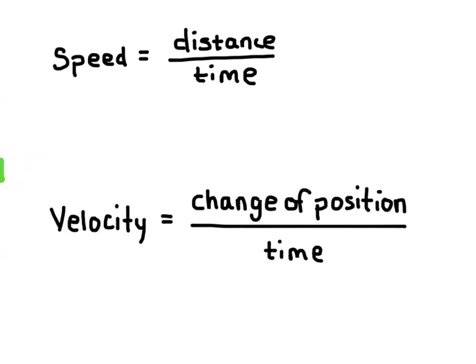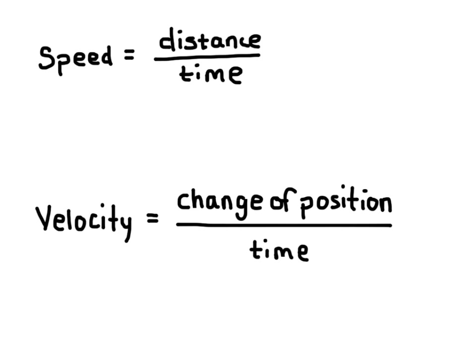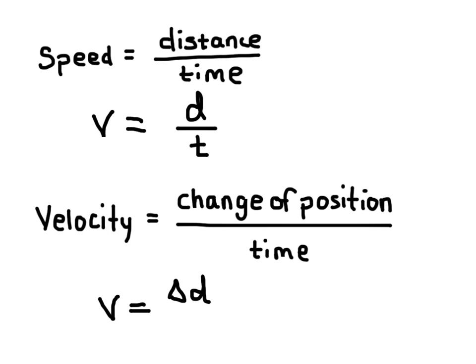So how do we calculate speed and velocity? Speed is the amount of distance traveled over the length of time it took to travel that distance. The symbol for speed is V — it makes more sense because the same symbol is used for velocity, and velocity starts with a V. So we have V equals distance D over time T. Velocity is equal to the change in position over the time it took to change that position. We use the same symbol: V equals delta D over T. That delta symbol — the little triangle — means 'the change in.' So we have the change in position over time.